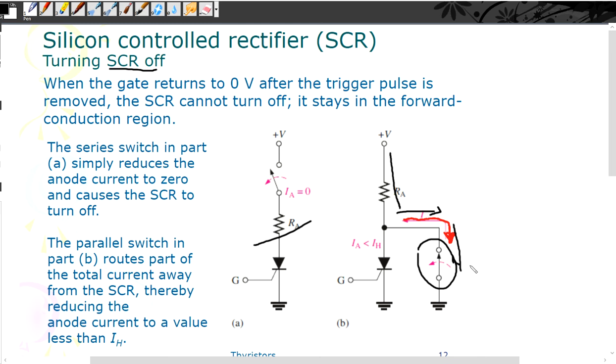So when it flows here, the current IA is going to be less than IH. When it's less than IH then this one turns off. But if IH was greater than IA then this will still be on.